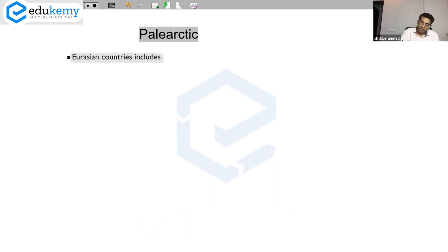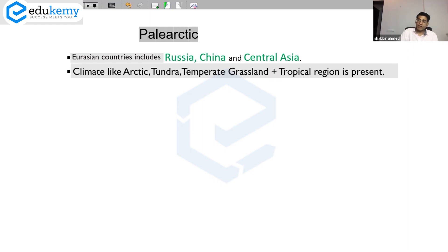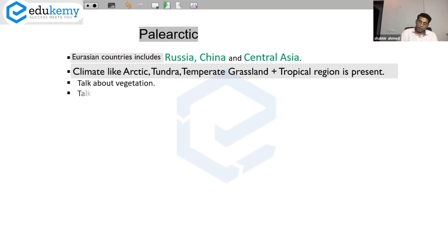For Arctogean, talk about the location — this is Eurasia. Talk about which countries: big parts of Europe, 2-3 countries, Russia, Central Asia, parts of China — name some countries. Then talk about the climate: there is a very broad range of climate — arctic zone, tundra zone, grasslands, areas of temperate deserts, and also tropical areas. Give a range of what the climate is linked to this region.